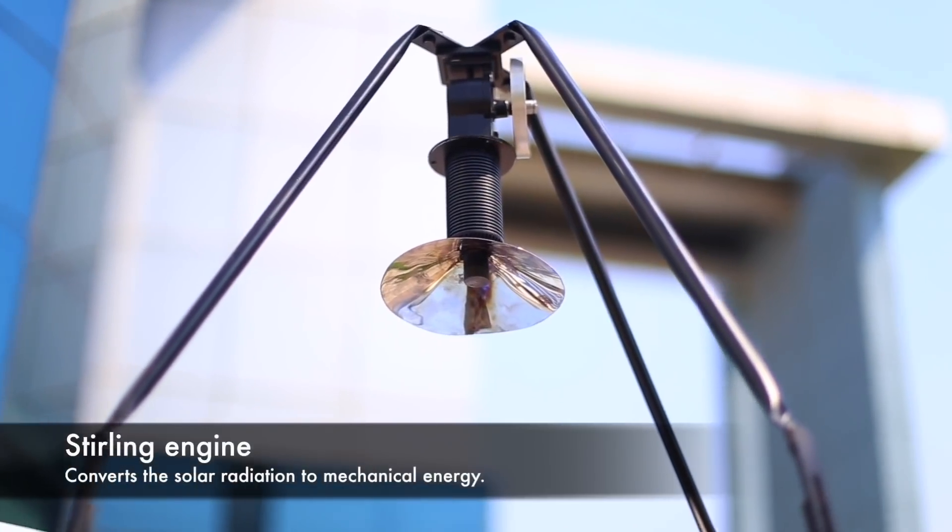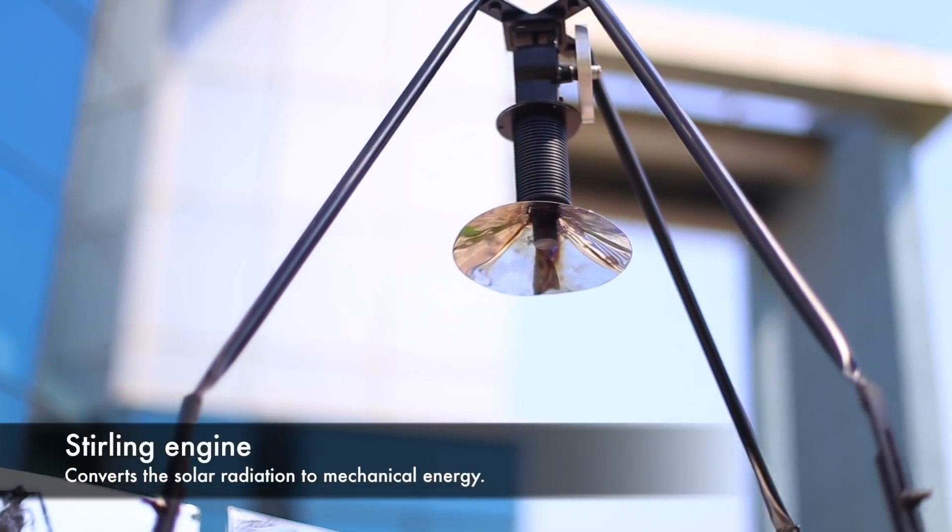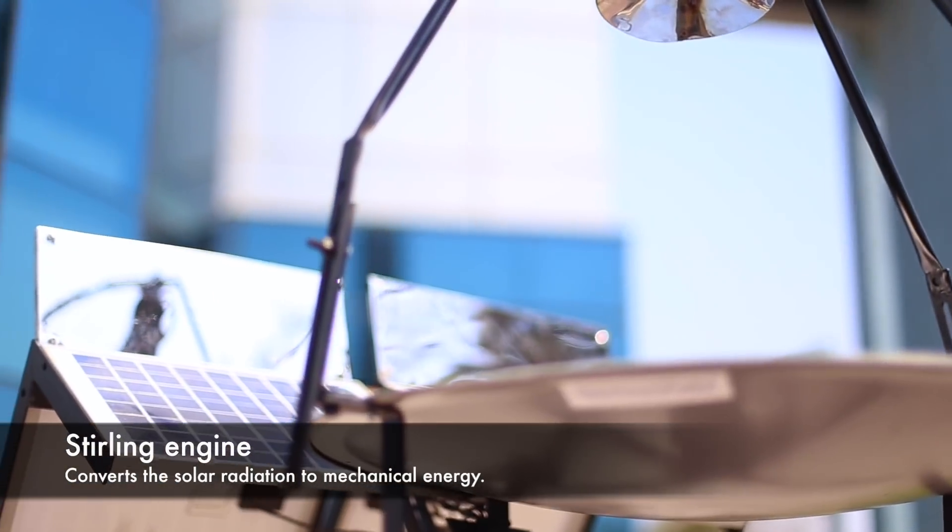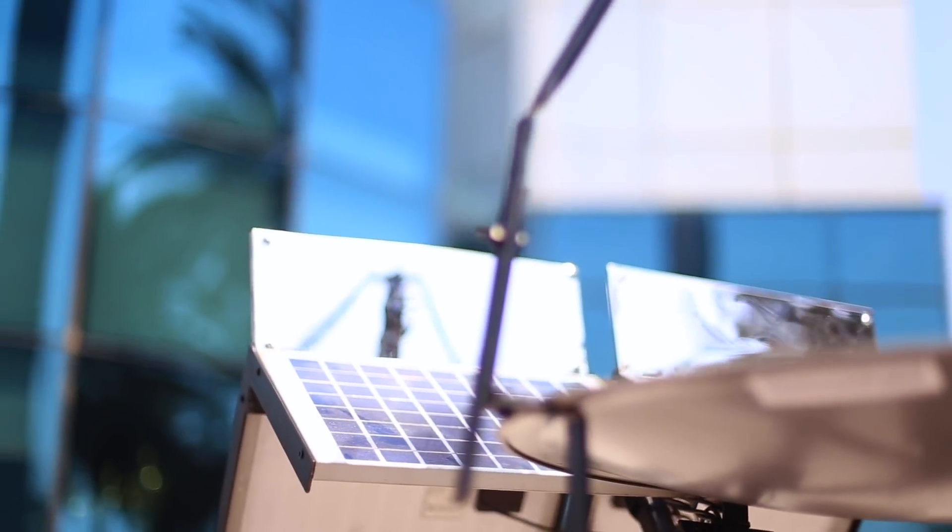The concentrator concentrates the sunlight on a receiver, which is the Stirling engine that converts the collected solar energy into mechanical energy.